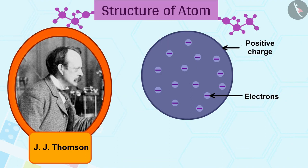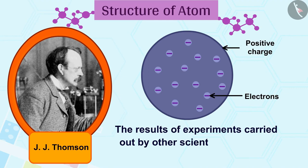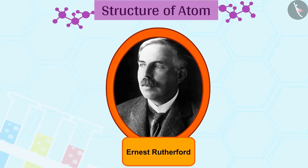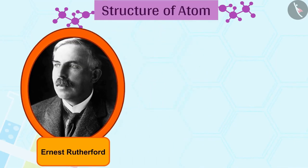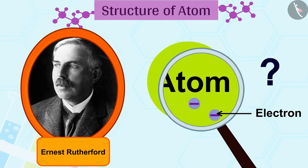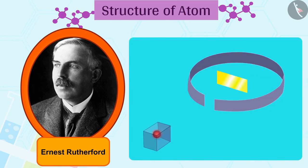Although Thomson's model explained that atoms are electrically neutral, the results of experiments carried out by other scientists could not be explained by this model. Ernest Rutherford was interested in knowing how the electrons are arranged within an atom. Rutherford designed an experiment for this.